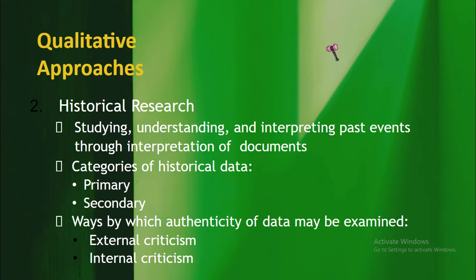External criticism is the process by which historians determine whether a source is authentic. You need to check the validity of your sources — making sure the books or materials you gather are based on facts. As a researcher, you have the ability to spot whether a source is legitimate or not.